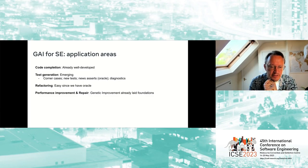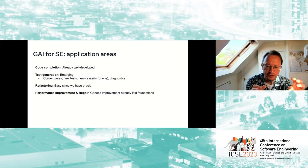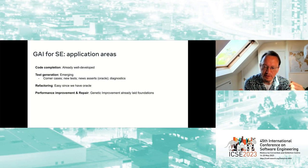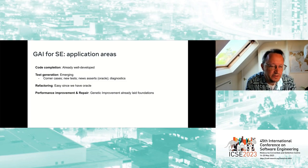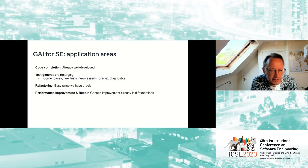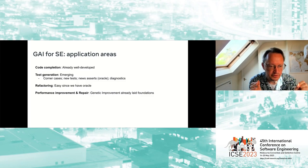Another area well-studied in the last 18 months is repair — there are already 20 or so papers on this. It fits neatly into the genetic improvement framework, where we use a generate-and-test approach. What's less well studied is performance improvement — and here I think there's potential for tremendous impact if we can find ways to automatically improve software performance using large language models inside a genetic improvement framework.